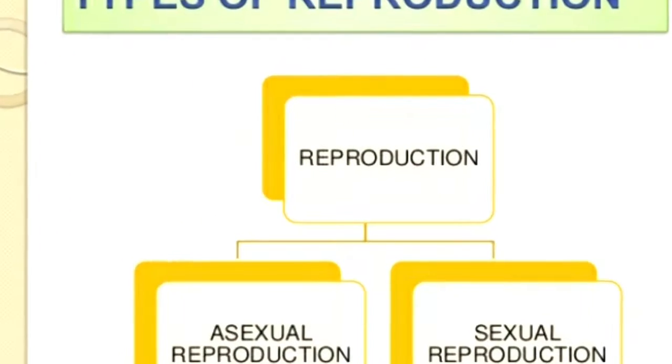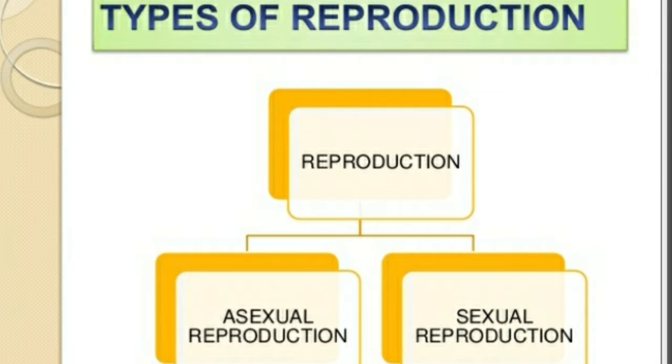What are the types of reproduction? We have two types: asexual reproduction and sexual reproduction.